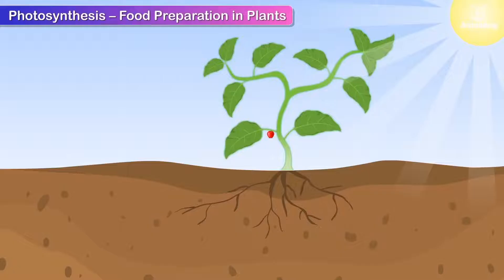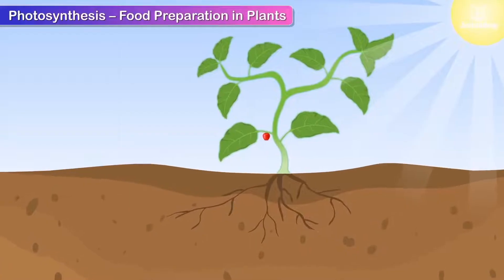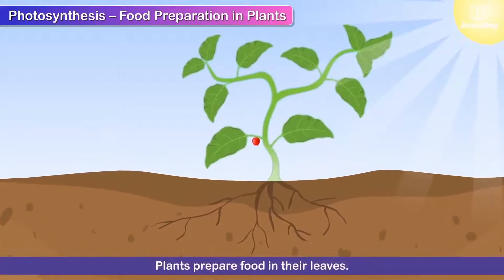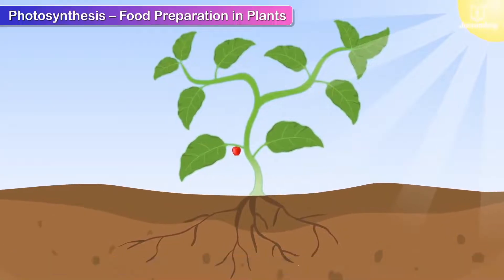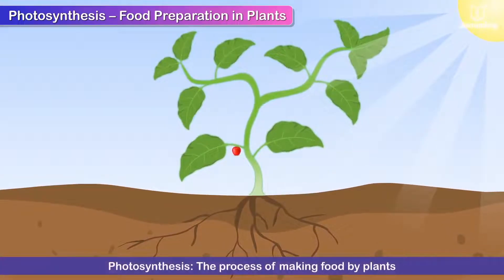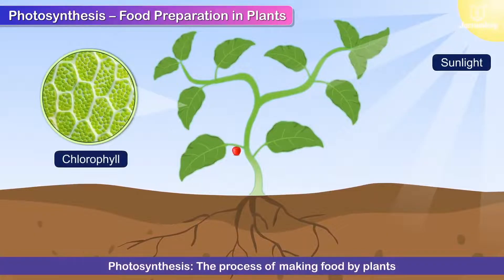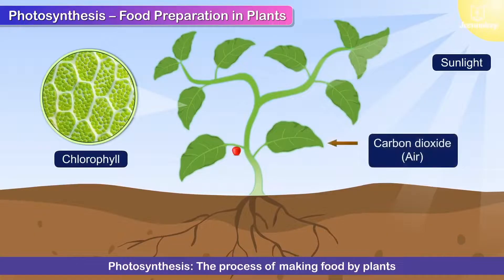Photosynthesis: food preparation in plants. Most plants have green leaves and prepare food in their leaves. The process of making food by plants in the presence of sunlight, chlorophyll, carbon dioxide and water is called photosynthesis.